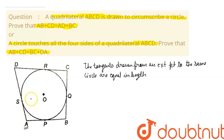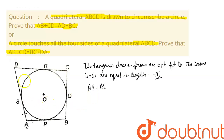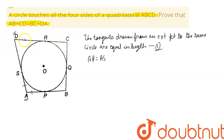If we consider point A as an external point, the tangents AS and AP are of the same length, so AP equals AS — this is equation one. Similarly, considering point D as the external point, the tangents DR and DS are of the same length, giving us DR equals DS — this is equation two. This uses the same tangent-length theorem.